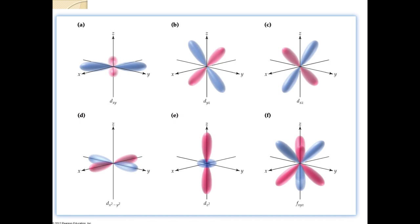Depending on your lecture professor, they'll probably want you to know the general names of the different orbital types. The p orbitals especially — if you're going to organic chemistry you'll need to know their general orientation and names. D orbital names don't come up as much in organic, but in upper-level classes like inorganic chemistry you'll see them again. The key: if there are no squared terms in the d orbital name, the two axes listed tell you what axes the lobes are between. If there are squared terms, the lobes are along those axes.